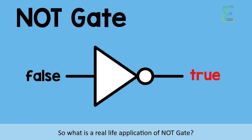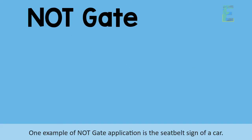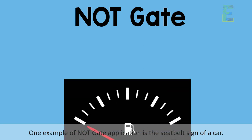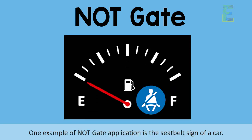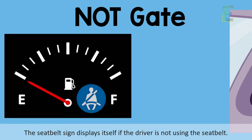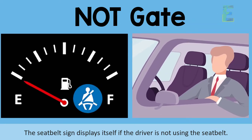So what is a real-life application of a NOT-GATE? One example is the seatbelt sign of a car. The seatbelt sign displays itself if the driver is not using the seatbelt.